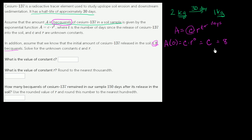And they tell us what A of 0 is. They say A of 0 is 8, is 8 becquerels. So this is going to be equal to 8. So our constant here, the C, is just going to be equal to 8.